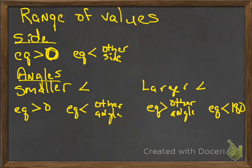Okay, now on the next one, you might want to make sure this is for a range of values. If it's a side, the way I'm going to set it up is the equation is always going to be greater than 0 or less than the other side. If it's angles, then you've got to decide, is it the smaller one or the larger one? If it's smaller, then it's greater than 0 but less than the other angle. If it's the larger one, it's greater than the other angle, less than 180.